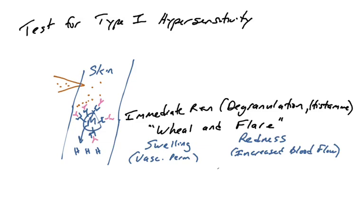And what you get is what's called the wheel and flare reaction. So you get the swelling that happens within minutes, you get this redness that occurs, and this is all because of changes in the blood vessels due to histamine release, for example, and mast cell degranulation.